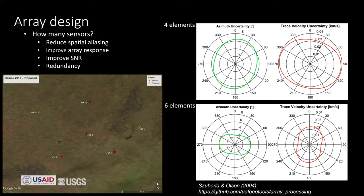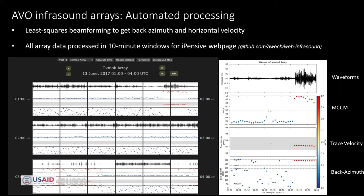In Alaska, the most expensive thing isn't installing the array — it's getting to the array. So if we have a six-element array, we can lose one or two elements and still get a back azimuth, and we might not be able to visit the array during winter for several months. That redundancy is really important. The nice thing about the array is that we now have pretty mature codes that automatically process the data and provide plots that anyone in the observatory can access to see what's going on at any volcano.